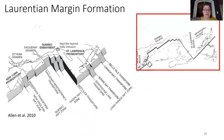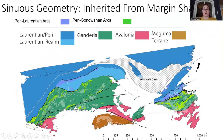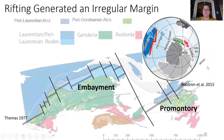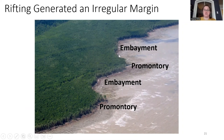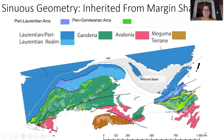Looking at the orogen on a large scale, that sinuous geometry — as Thomas proposed — is actually a reflection of the inherited geometry of the margin, where the sinuous geometry is basically a function of major promontories and embayments along the Laurentian margin. Promontories are major regions on the craton that jutted out into the ocean, and embayments are craton-scale coves. So the sinuous geometry of the orogen itself is actually a function of inheritance — inherited from the original rifted margin geometry — which is really cool in itself.